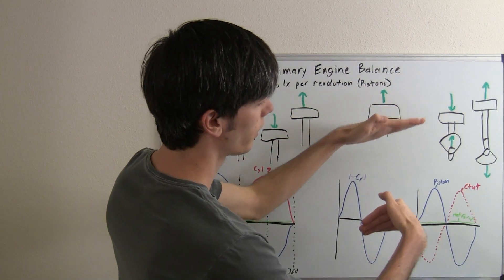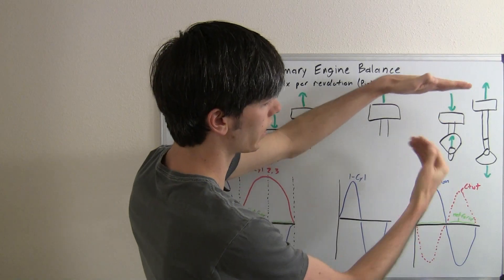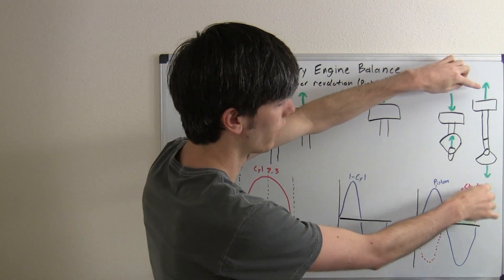As this piston moves down, that counterweight is going to rotate up and it's going to have a vertical force up. And then as it moves up, the counterweight is going to rotate down and have that downward force.